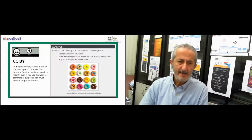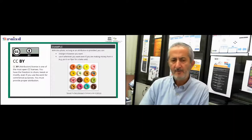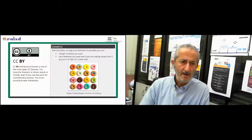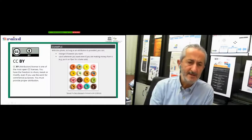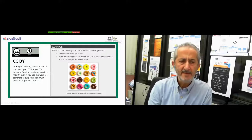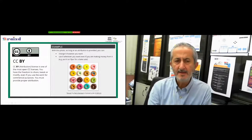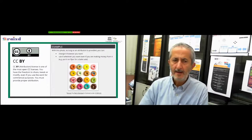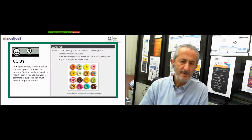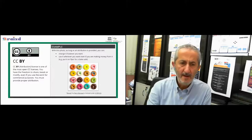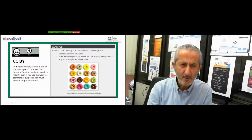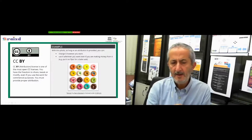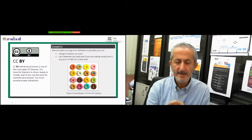For a CC BY example: if I find this picture online with CC BY — the most open license — I can change it however I want, make money from it, print it on a t-shirt, put it in a PowerPoint — anything. But I must give attribution. The attribution reads: 'Donuts by Ferry, licensed under CC BY 2.0.'